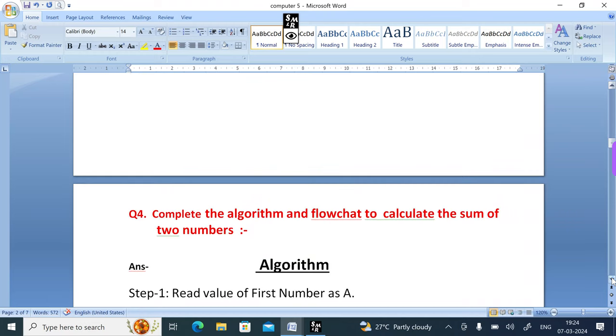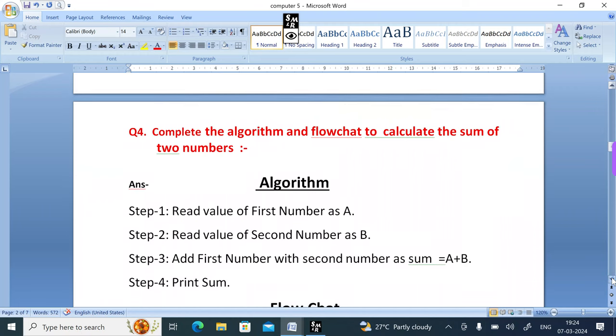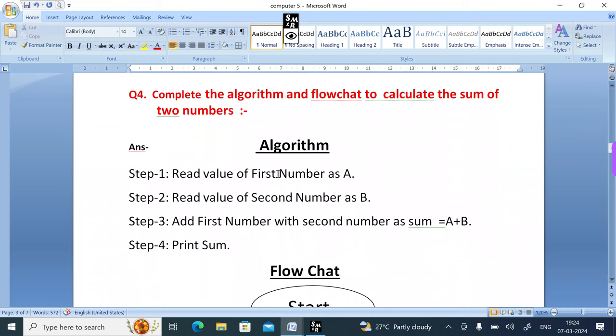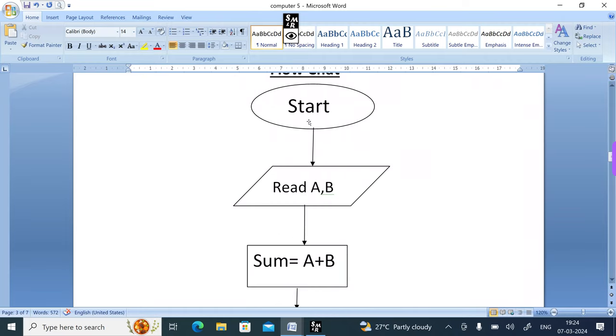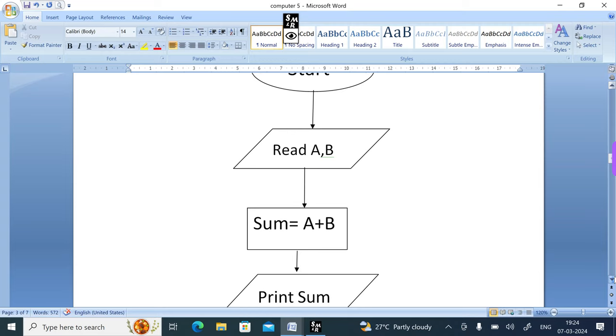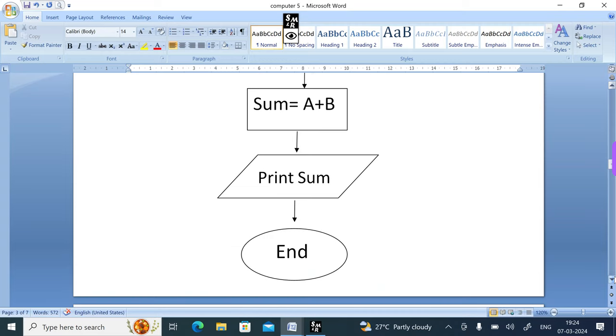Question number 4: Complete the algorithm and flowchart to calculate the sum of two numbers. Let's first see the algorithm: Step 1 read value of first number as A, Step 2 read value of second number as B, Step 3 add first number with second number as sum equals A plus B, and Step 4 print sum. The flowchart will be: start button, read A B, sum equal to A plus B in a processing box, print sum, and end.